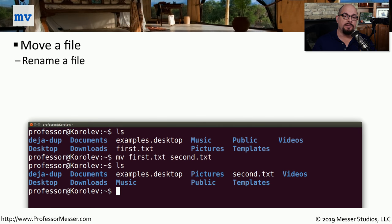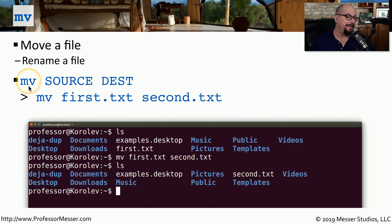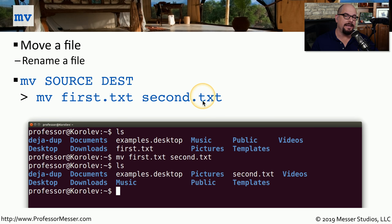In Linux, if you want to rename a file, you use the move command, or MV. The syntax is 'mv source_file destination_file'. So if you wanted to rename first.txt to second.txt, you would use 'mv first.txt second.txt' and press Enter, and the file name would be changed from first to second.